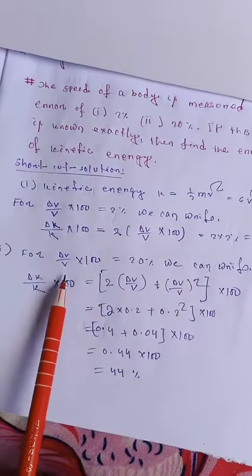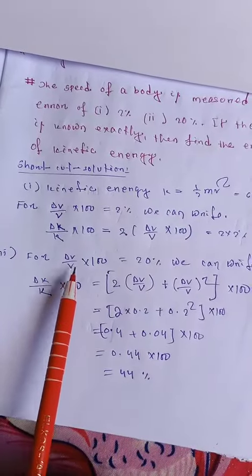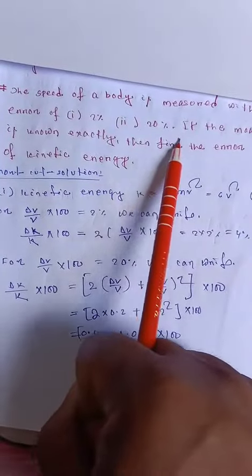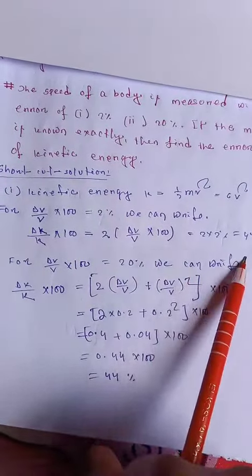In the second condition, del v by v times 100 equals 20% error. For this case, the error in kinetic energy calculation changes.